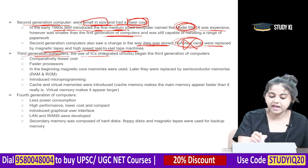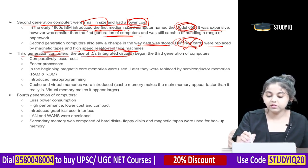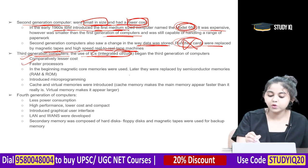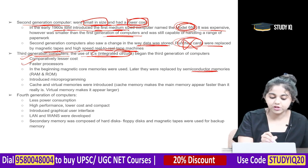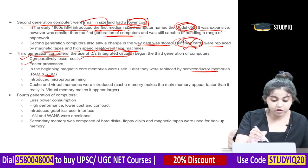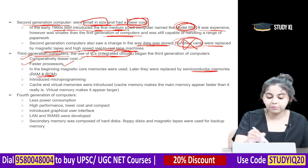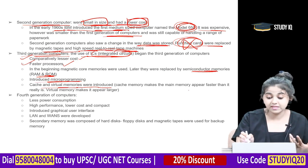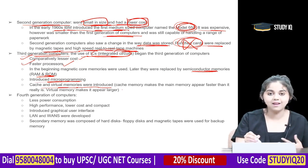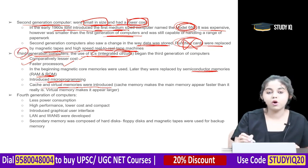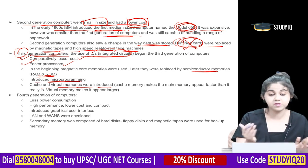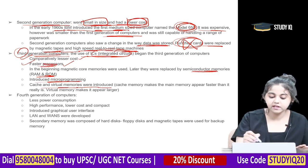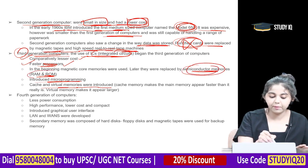Third generation computers used integrated circuits (ICs). They had comparatively lesser cost and faster processors. Magnetic core memories were initially used, later replaced by semiconductor memories — RAM and ROM. They also introduced microprogramming, cache memory, and virtual memory. Cache memory makes main memory appear faster, while virtual memory makes it appear larger.